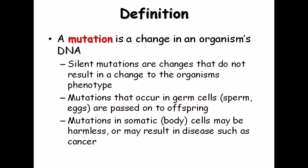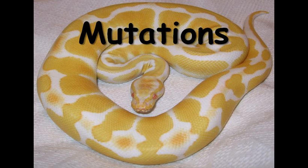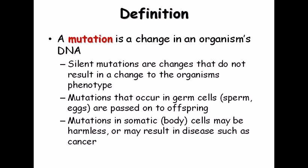A mutation is a change in an organism's DNA. It could be a silent mutation — a change that does not result in any change in the organism's phenotype, so we can't see the effect. The mutation happens at the genetic/DNA level but is not visible. Mutations that occur in germline cells like sperm or eggs are passed to offspring. Mutations in somatic cells (body cells) may be harmless or may result in disease such as cancer.